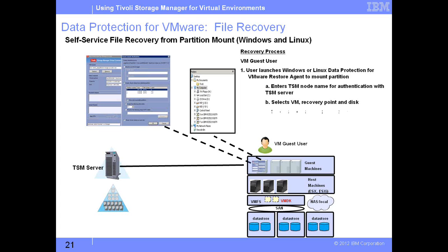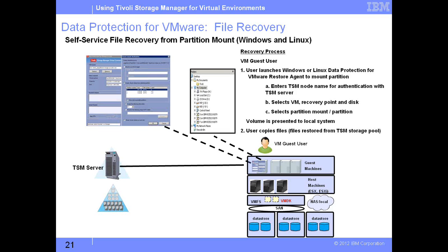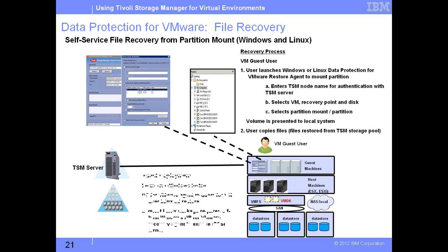We enter the TSM node name for authentication with the TSM server into the tool shown in blue on the left. We select the VM, the recovery point, and the disk from where we want to do the restore. We select the partition, and once done, the volume is presented to the local system as an individual mounted disk. From that disk, I can browse and select the file I need to restore — it is simply a file copy. For this functionality, you need the data protection for VMware agent installed inside the guest VMs.